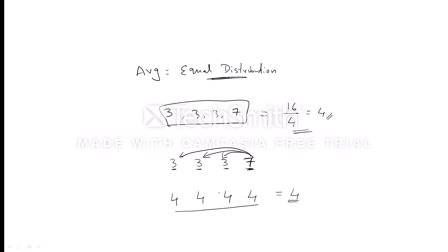Suppose in a class of 50 members each person has one chocolate — average is 1, because everyone has equal chocolates. If anyone enters with more chocolates, we distribute all chocolates equally among all members. This is the equal distribution approach. Remember: average is not just sum divided by total observations — average is equal distribution. In the next video we'll solve more important questions on averages. Thank you all.